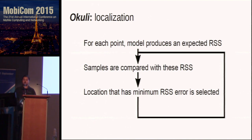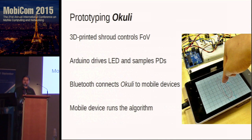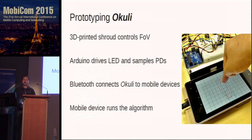After this signal processing, the actual localization is very simple. Upon start, the model will generate a lookup table of expected RSS for each location in the working area. When a sample is available, it is compared to all entries in the RSS lookup table, and the location with minimum RSS error is selected as the location of the finger. We prototype Okuli with the aforementioned 3D printed shroud as well as an Arduino which drives the LED and two PDs. The Arduino sends the samples via Bluetooth module to the tablet, and the actual localization algorithm runs on the tablet. We place the tablet in front of Okuli so we can collect touch screen traces together with Okuli's traces simultaneously and compare them.